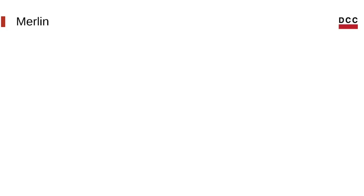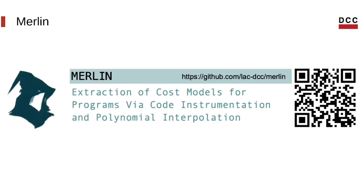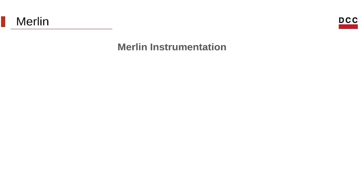So we know that we want to build cost models automatically and we know what kind of programs we want to work with. For this task, we have built a tool called Merlin. You can access Merlin's GitHub repository through the URL or the QR code shown. Merlin has two modules: one that does instrumentation and the other that does interpolation. Merlin's instrumentation module was implemented as a plugin for the Clang frontend, so we work only with C and C++ programs. Merlin's instrumentation will receive a C or C++ file as input and verify if that input has the SCP property.